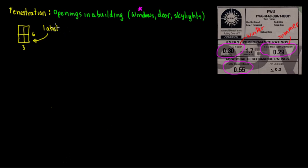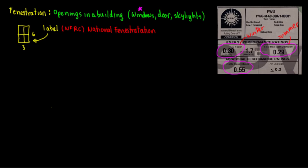What is NFRC? NFRC stands for the National Fenestration Rating Council. Now we know what fenestration is — openings on buildings related to heat load. Basically, this entity is a non-governmental entity that rates the energy performance of your window. These labels are going to be present on your window.